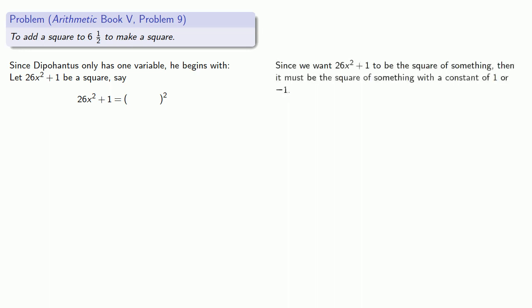So let's think about that. Since we want 26x squared plus 1 to be the square of something, then it must be the square of something with a constant of 1 or negative 1. Also, we might notice that since 5 squared equals 25, we'll let the variable part be 5x. There's no real requirement that this be the case, but it turns out that if we do let it be close to the square root, we get much better results. So we'll assume that 26x squared plus 1 is the square of 5x plus 1.